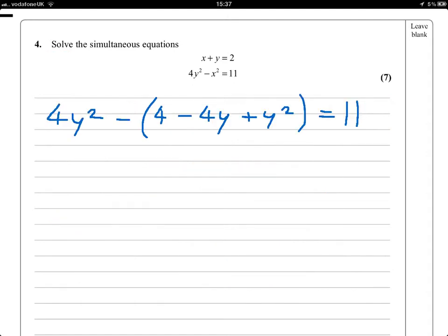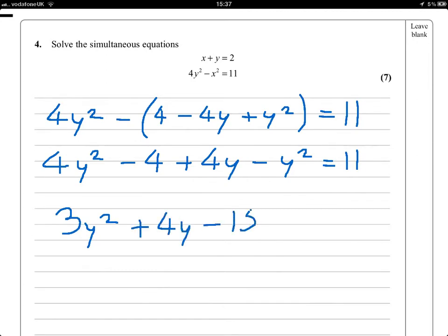So just showing every step of my calculation, this becomes minus 4 plus 4y minus y squared is equal to 11. And if I group all of the like terms, bring the 11 across, I see that 3y squared plus 4y minus 15 is equal to 0.